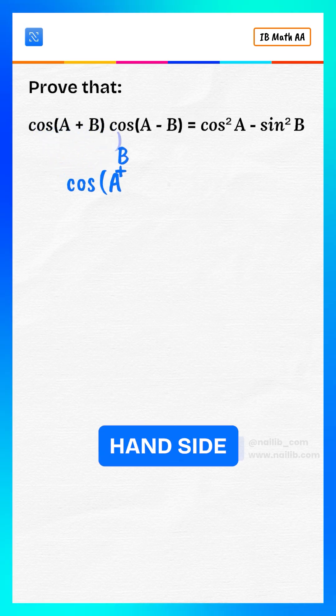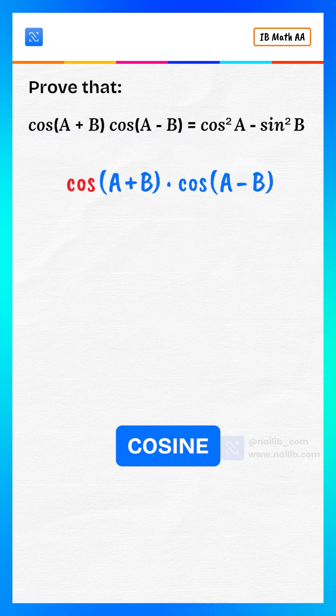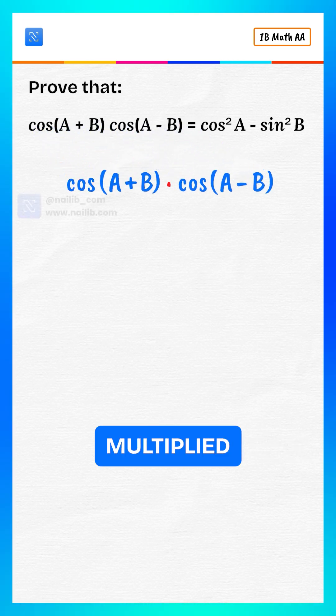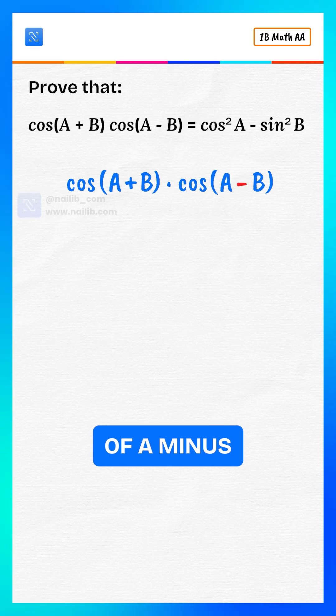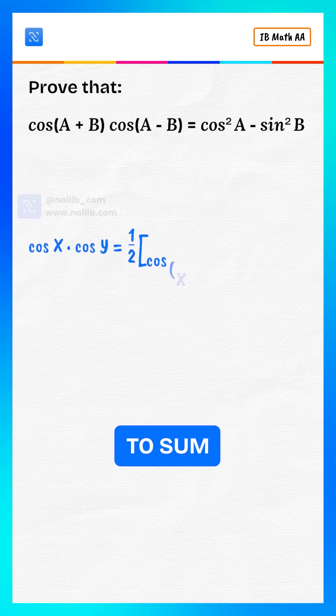We start with the left-hand side: cosine of A plus B multiplied by cosine of A minus B. Use the product to sum identity.